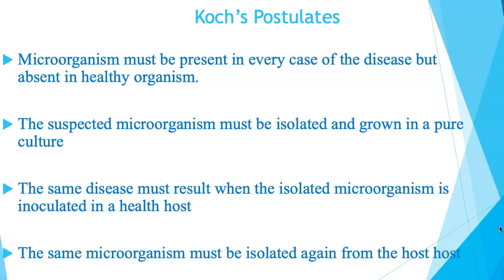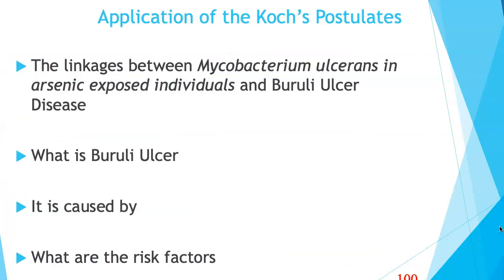Koch's postulates have four main criteria. First, the microorganism responsible for causing a disease must be present in every case of the disease but absent in healthy organisms. Second, the suspected microorganism must be capable of being isolated and grown in pure culture. Third, the same disease must result when the isolated microorganism is inoculated into a healthy host. Fourth, the same microorganism must be isolated again from that host.